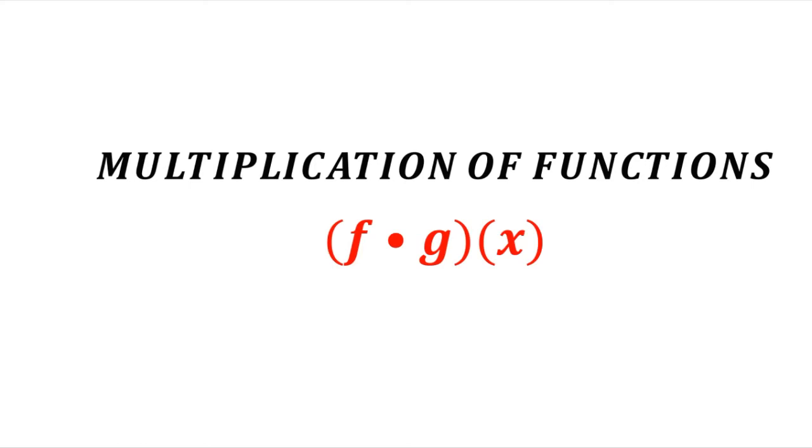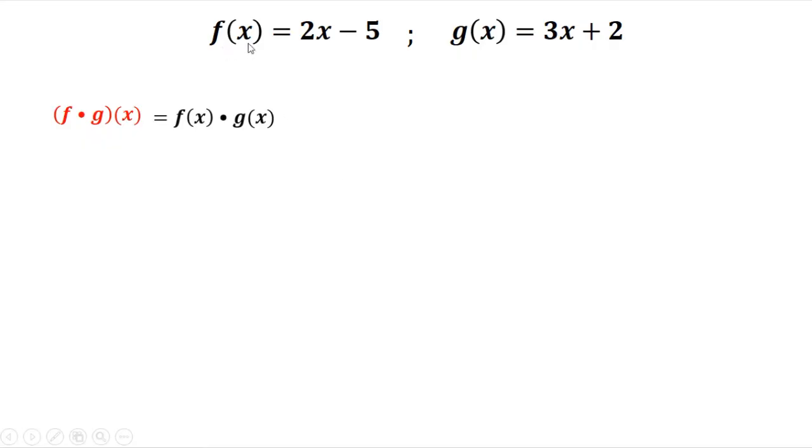Okay, so multiplication of functions. We have f of x times g of x. Let's have this given, so this one is f of x and g of x, then solve for f of x times g of x.